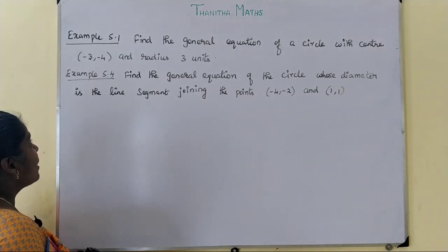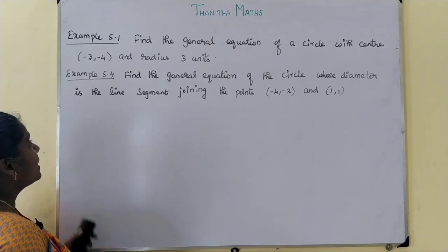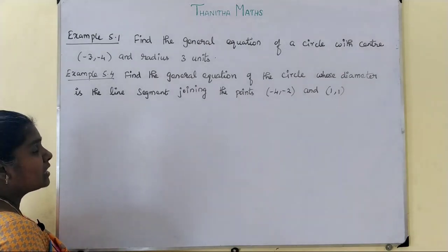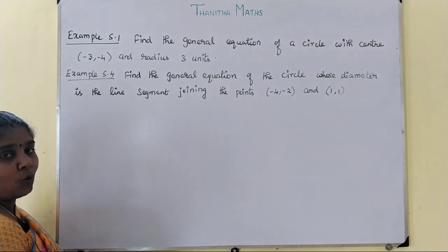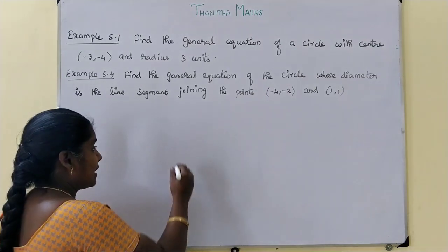In example 5.4, find the general equation of the circle whose diameter is the line segment joining the points minus 4, minus 2 and 1, 1.